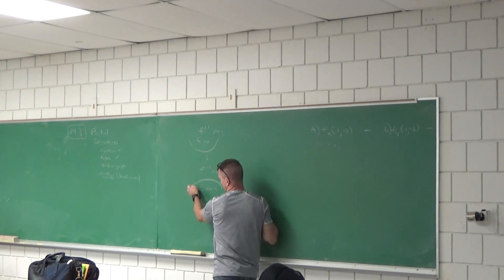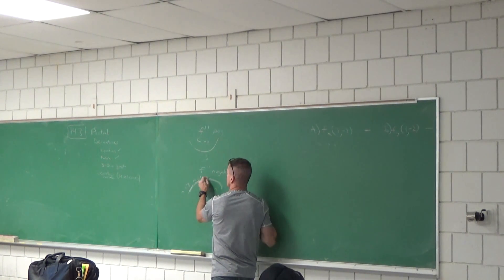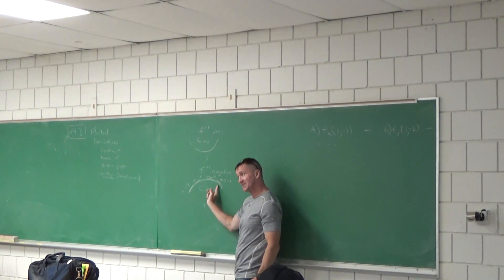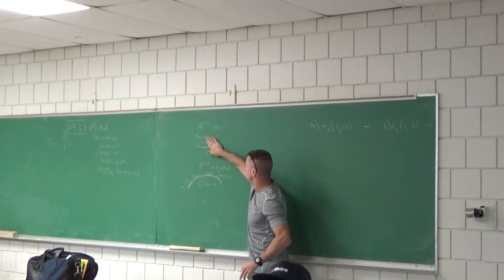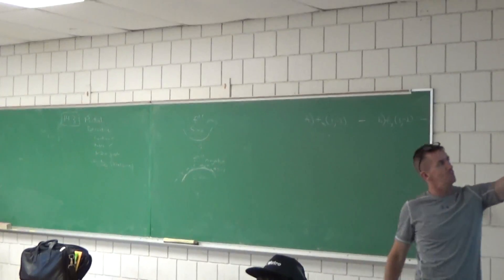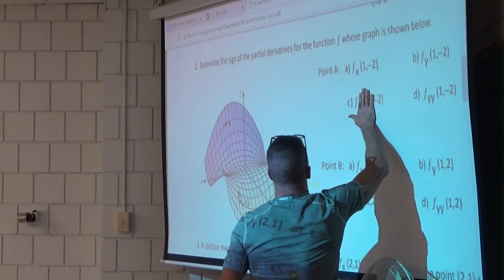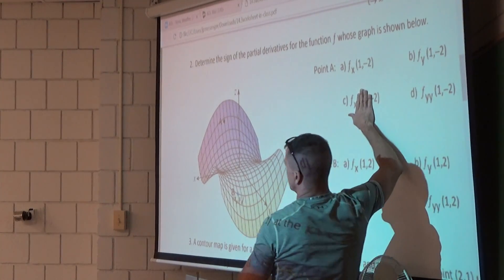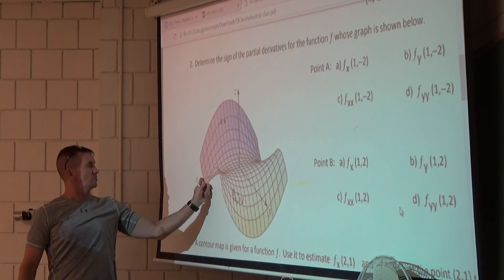For example, if the slope values go from three to one to zero to negative one, those slope values are always decreasing — that's concave down. Let's go back to the point (1, -2) and think about what's going on with the slope of f as we move in the direction of the positive x-axis. We're looking to see if it's concave down or concave up.